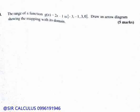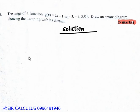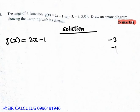In this video we look at a question under functions, Book 3. The question reads: the range of the function g(x) = 2x - 1 is {-3, -1, 3}. Draw an arrow diagram showing the mapping with its domain.